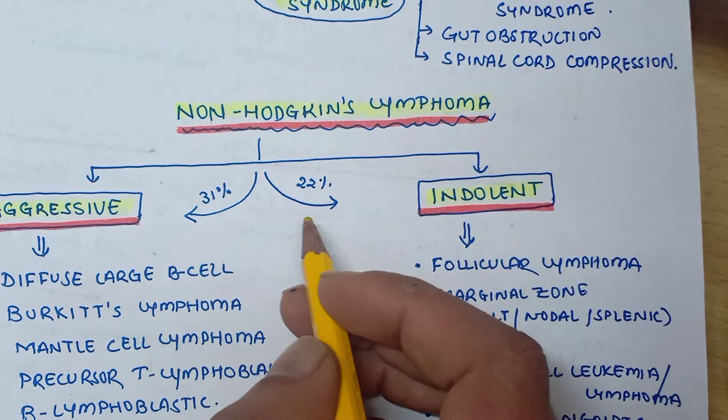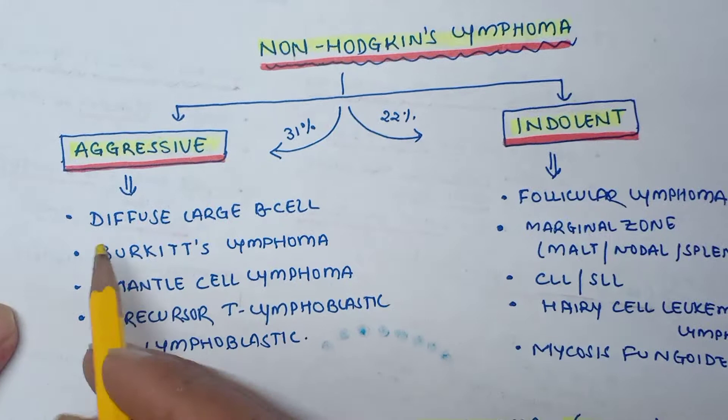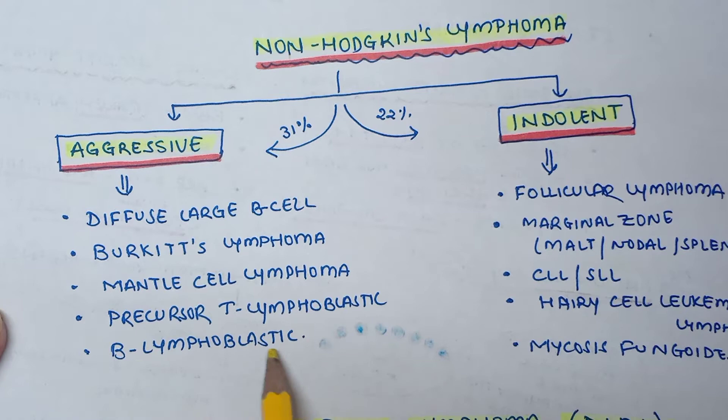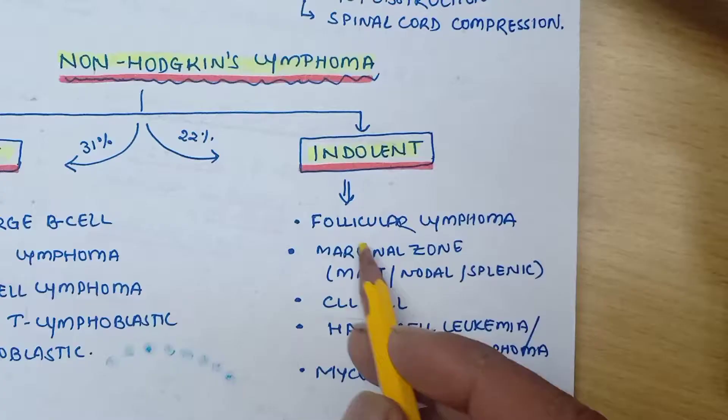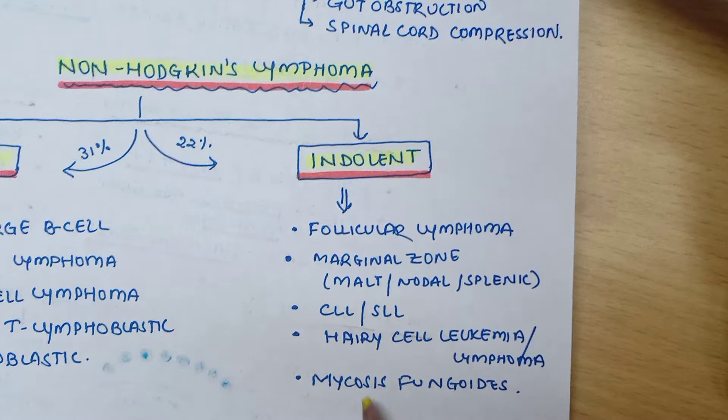31% of Non-Hodgkin's Lymphoma is aggressive and 22% are indolent. Aggressive types include diffuse large B-cell lymphoma, Burkitt's lymphoma, mantle cell lymphoma, precursor T-lymphoblastic lymphoma, and B-lymphoblastic lymphoma. Indolent types include follicular lymphoma, marginal zone lymphoma, CLL, SLL, hairy cell leukemia, and mycosis fungoides.